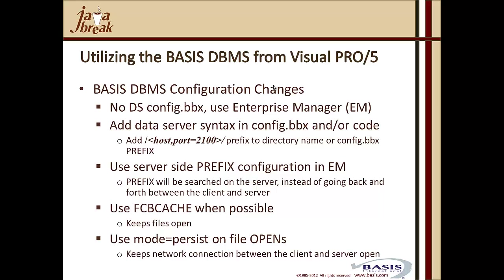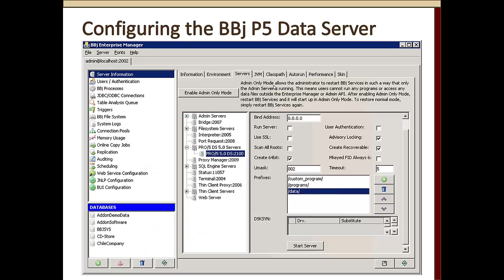Use FCB cache when possible — it keeps files open. This won't be useful if you're relying on the prefix to resolve the same file name in a different directory, since FCB cache returns the previously opened file. Use mode=persist on file opens to keep the network connection between client and server open. This screenshot shows configuring the BBJ Pro5 data server in Enterprise Manager under the Servers tab, showing Pro5 5.0 data server on port 2100. Here you specify 64-bit files, recoverable/highly recoverable files, advisory locking, UMASK settings, prefix paths to data files and programs, and disksync settings for Visual Pro5 — replacing your Pro5 data server config.bbx.